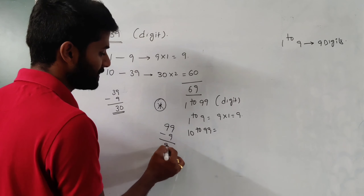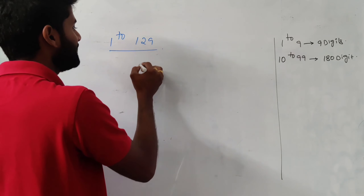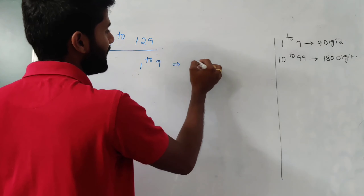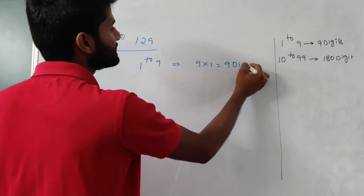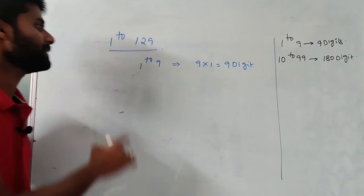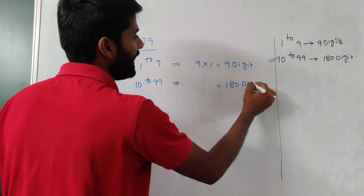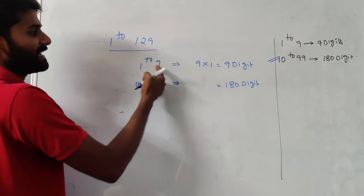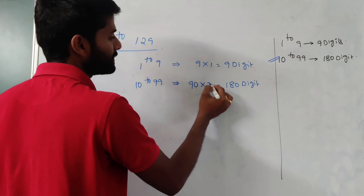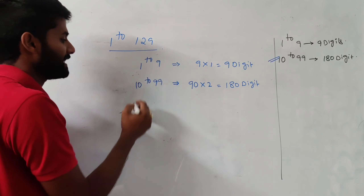From 10 to 35, check how many two-digit numbers there are. Simply do 35 minus 9, which gives 26. So there are 26 two-digit numbers, and each uses two digits. Therefore 26 into 2 equals 52 digits. Adding the 9 digits from 1 to 9, the total number of digits from 1 to 35 is 61 digits.